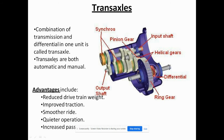The combination of transmission and differential in one unit is called a transaxle. Transaxles can be both automatic and manual. This is the synchro, this is the pinion gear, these are the helical gears, this is the differential which is used to provide torque distribution, and this is the ring gear.